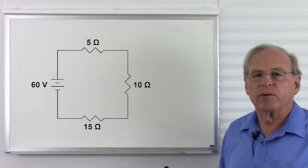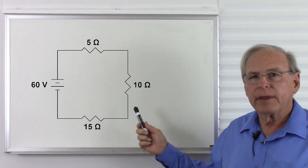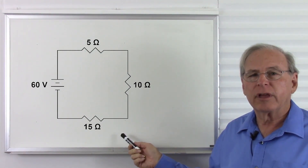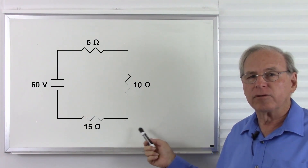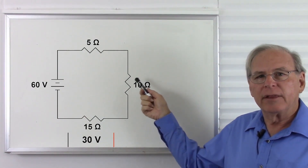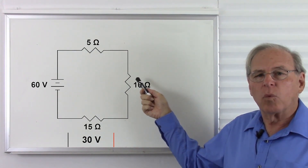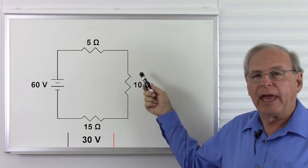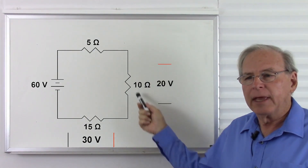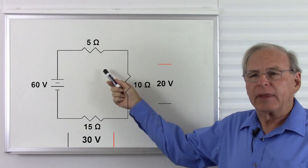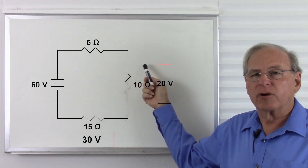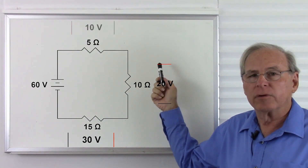Let's take another look at how the voltage is distributed around the circuit. The 15 ohm resistor is half of our total resistance, and it has half of our voltage — 30 volts. The 10 ohm resistor is one-third of our total resistance, and we have one-third of our total voltage, 20 volts. The 5 ohm resistor is one-sixth of our total resistance, and we have one-sixth of our total voltage, or 10 volts.